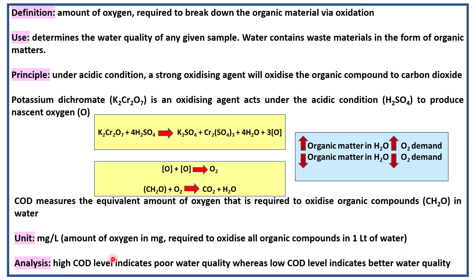A high COD level indicates a higher amount of oxygen required, meaning the sample contains a large amount of organic waste — hence the water quality is not good. Similarly, a low COD level indicates less oxygen is required, meaning the sample contains less organic waste — hence the water quality is better.